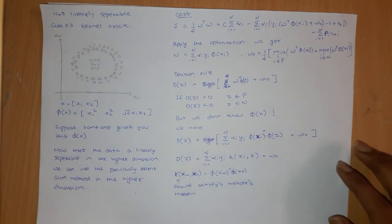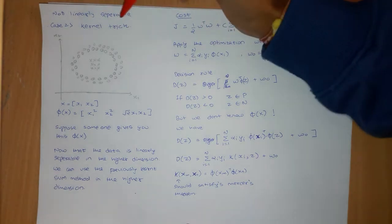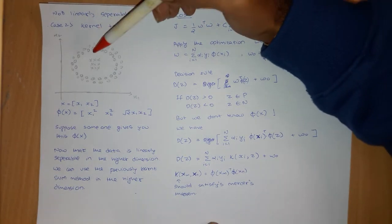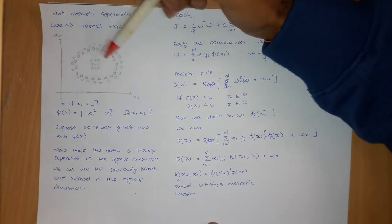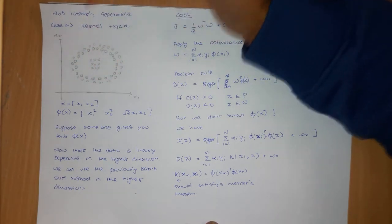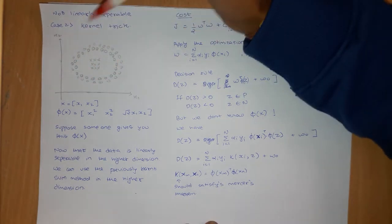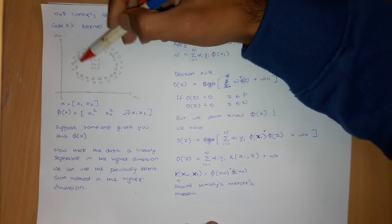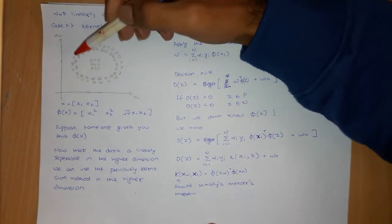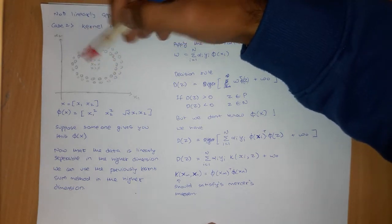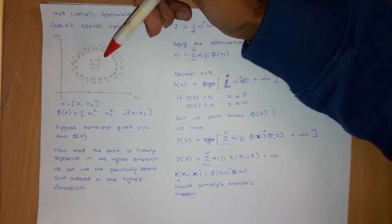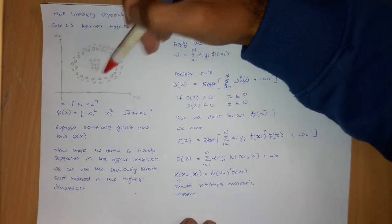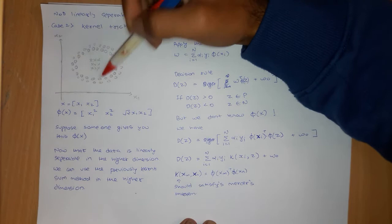In this video we are going to see the purely nonlinearly separable case. Here you can see data like this — it is purely nonlinearly separable because even if you allow some kind of error, a lot of samples will go into error. Basically you cannot have a small error over here.